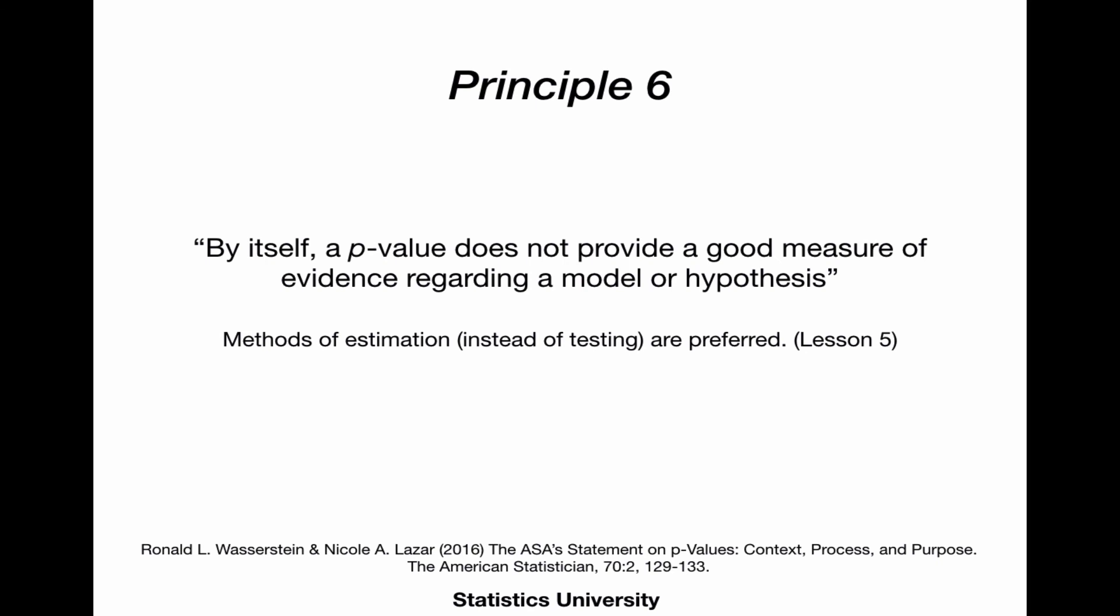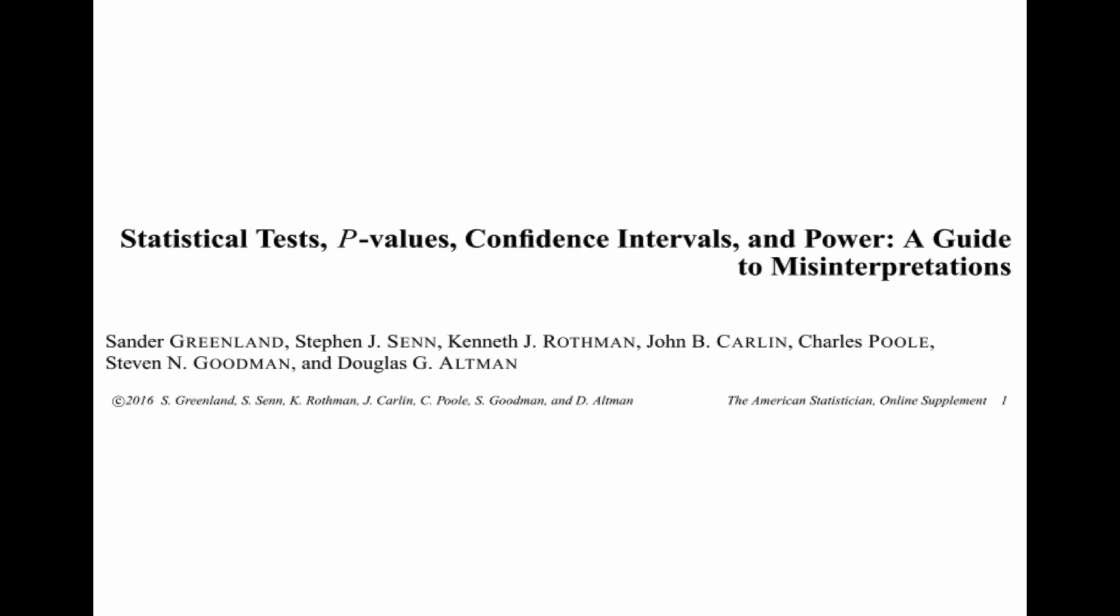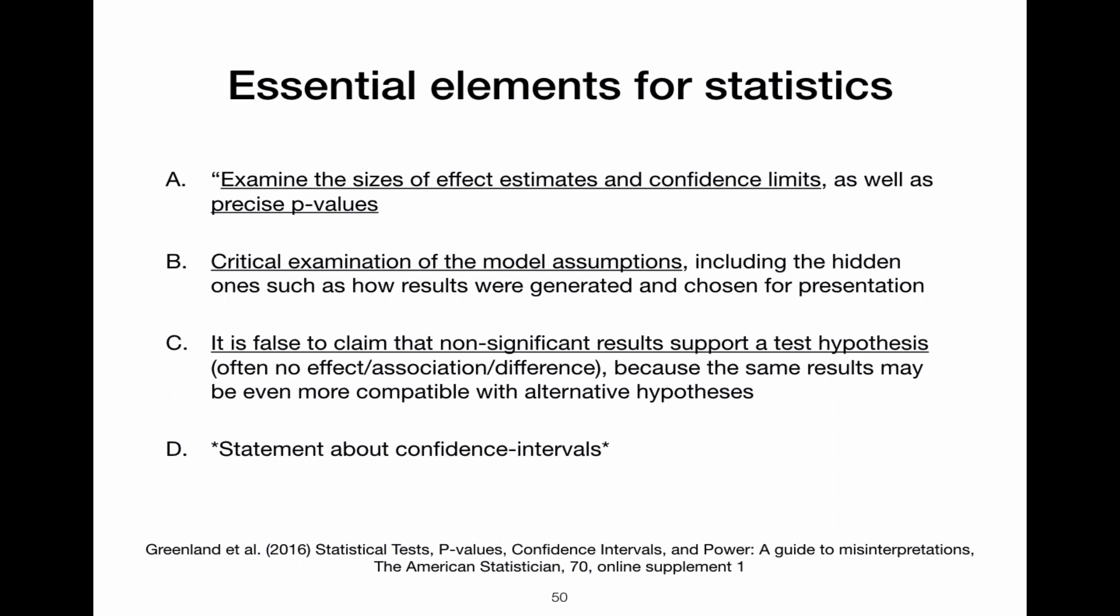And as I've already alluded to, methods of estimation. So for example, calculating a between-group difference and its associated 95% confidence interval is preferred. And then they go on listing some common misunderstandings about hypothesis testing and the p-value in this excellent paper in the same issue of the American Statistician in 2016. But you can find it in the online supplement. And they conclude with some essential elements for statistics in research that you should keep in mind.